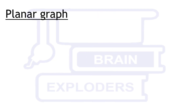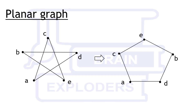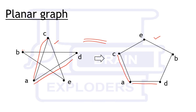What is a planar graph? If any representation of a graph can be drawn in such a way that no edges intersect each other, then the graph is called a planar graph. Here you can see that A is connected to D in this graph, and also A is connected to C. All the connections in the first graph are the same as in the second graph — both graphs are the same. In the second representation, no two edges are intersecting each other, and that's why this graph is called a planar graph.